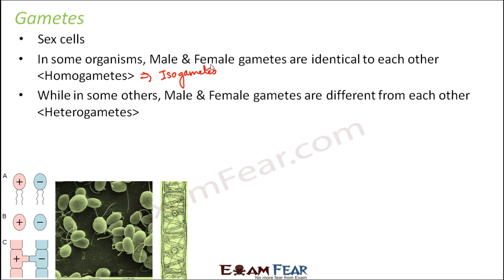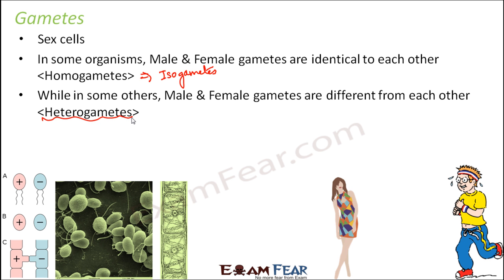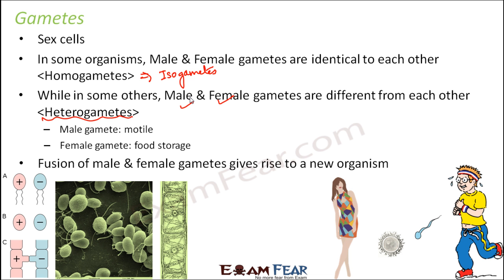The other type of gametes are called heterogametes — hetero means different. Here, male and female gametes differ from each other in appearance as well as in motility. For example, in human beings the female gamete is bigger in size compared to the male gamete, but the female gamete is not motile while the male gamete is motile. The female gamete primarily helps in food storage. Fusion of male and female gametes gives rise to a new organism.